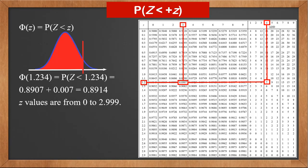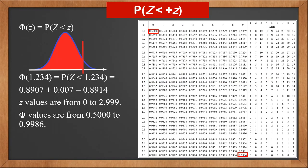In the z-table, we can see that z values are from 0 to 2.999. We know that almost all values are within 3 standard deviations of the mean, so the probability is almost 1 if z is greater than 3 — there's no need to look up. For negative z values, we'll learn later how to find their probabilities by symmetry. Phi values range from 0.5000 to 0.9986. Phi(0) is 0.5, because half of values are less than the mean 0. Phi(2.999) is 0.9986, which is almost 1.